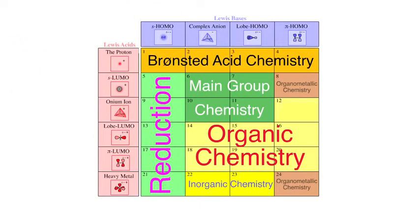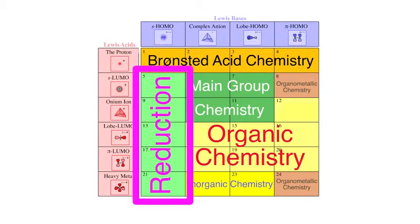When we look at the Lewis acid base interaction matrix, we see that it shows many types of reaction chemistry. Type 1, 2, 3, and 4 complexes all involve complexation with the proton H+, and so this involves Bronsted acid chemistry. Reactions with hydrogen and hydride ion, S Lumo Lewis bases, involves reduction.